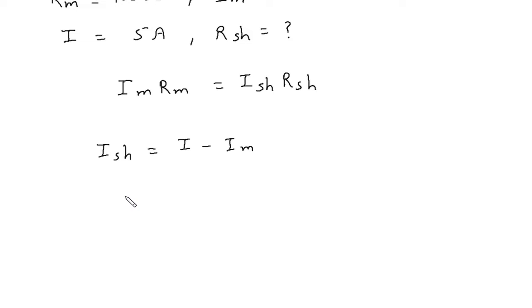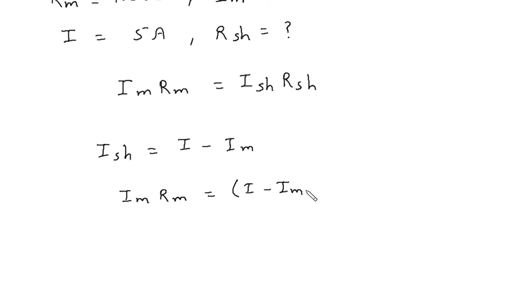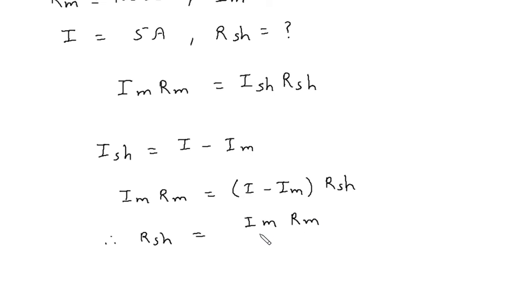Now if we put this value in: Im into Rm is equal to, in place of Ish we write I minus Im, then Rsh. Therefore, Rsh is equal to Im times Rm divided by I minus Im.